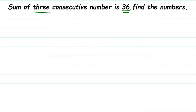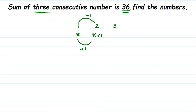To understand this better, let's take the example of one, two, and three, because they are consecutive. I'm taking small numbers just to explain. We don't know the first number, so let's assume a variable — let's say the first consecutive number is x. Now, from one to two, I have to add one to get the next number. Similarly, to x I should add one to get my next consecutive number, so x plus one.